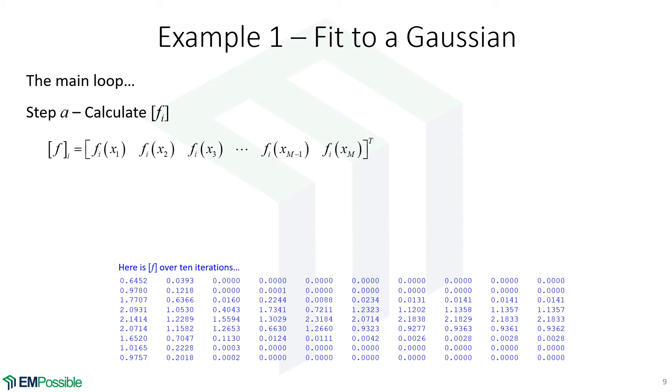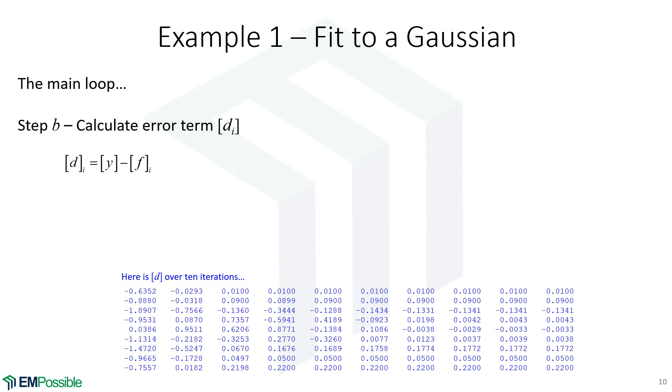But one thing we are looking for is that we're not seeing any infinities or not-a-numbers or other crazy things that would indicate this is not working. Since we just evaluated the function with our curve fit parameters, we can now calculate this error term D. That's telling us how good the fit is. So D is our measured values minus the values that we just calculated.